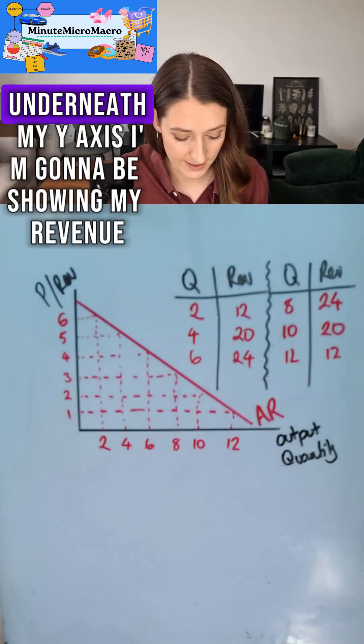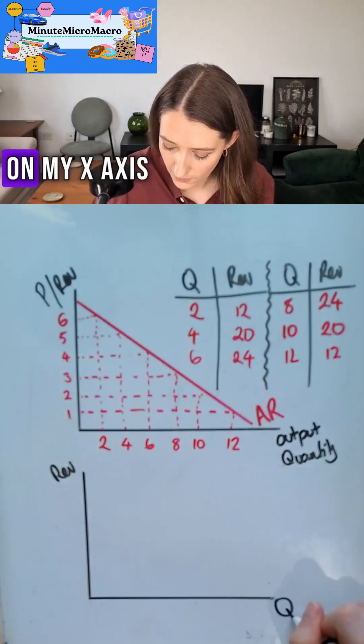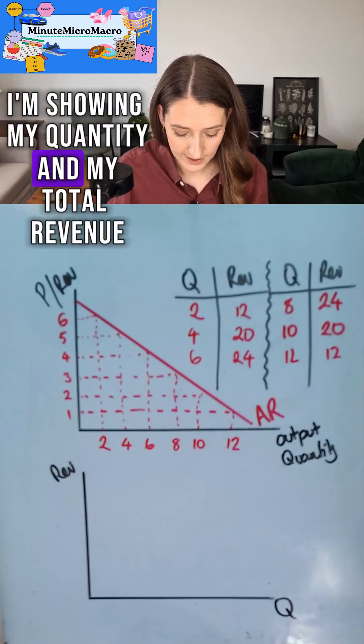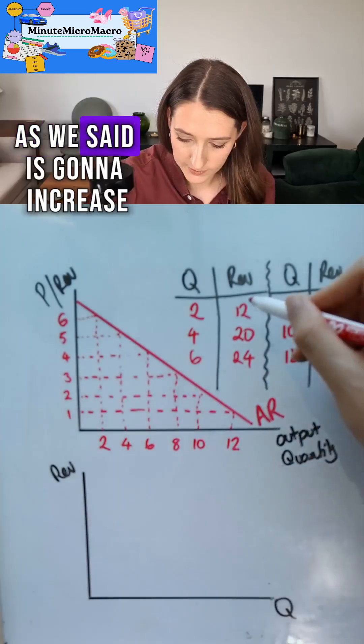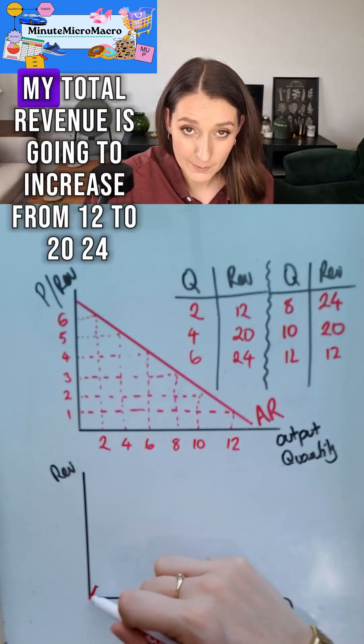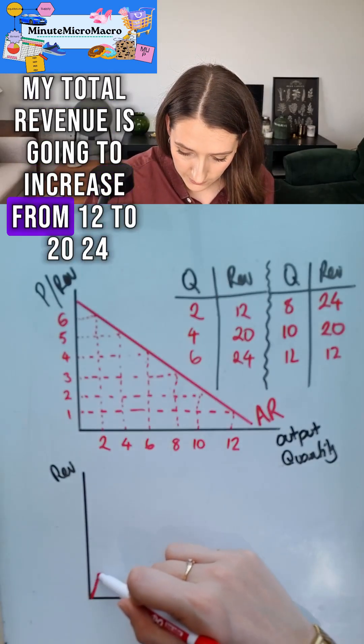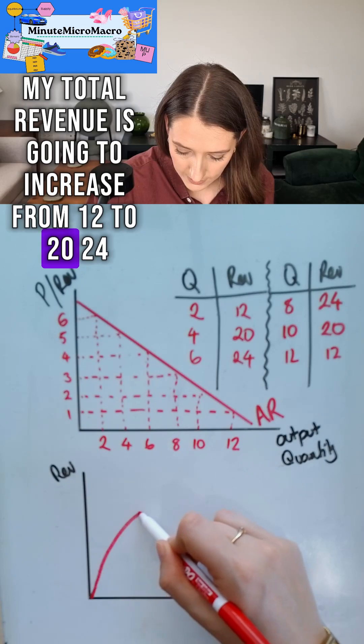We can draw that on a diagram underneath. My y-axis I'm going to be showing my revenue. On my x-axis I'm showing my quantity and my total revenue as we said is going to increase. You can see my total revenue is going to increase from 12 to 20, 24,